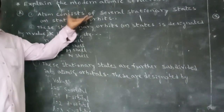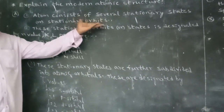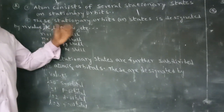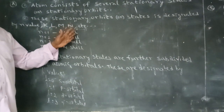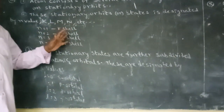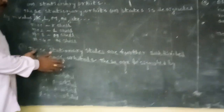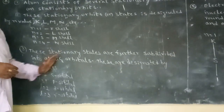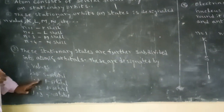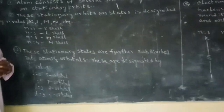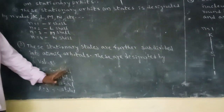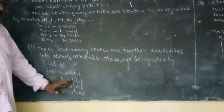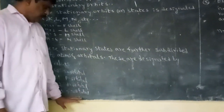Every atom consists of several stationary states designated by N-value: N=1 K-Shell, N=2 L-Shell, N=3 M-Shell, N=4 N-Shell. These stationary orbits are subdivided into atomic orbitals designated by L-value: L=0 S orbital, L=1 P orbital, L=2 D orbital, L=3 F orbital.